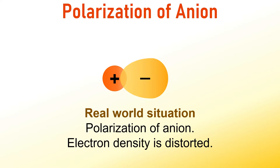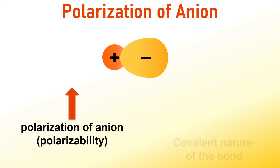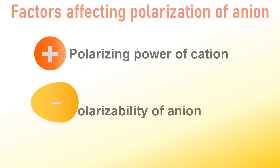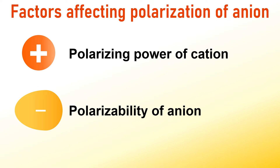It is worth noting that while cations can also slightly be distorted, we can safely neglect this and focus our discussion on the polarization of anions only. It is crucial to emphasize that the greater the degree of polarization of the anion, the greater the covalent character exhibited by the bond. Now, let us explore the factors that influence the polarization of anions. There are two key factors to consider: the polarizing power of the cation and the polarizability of the anion.